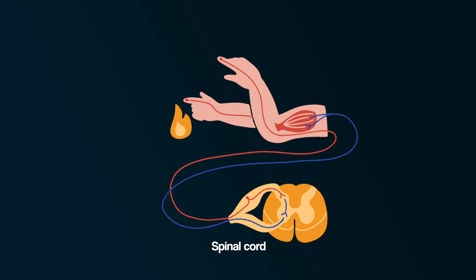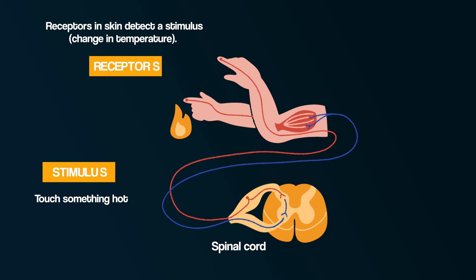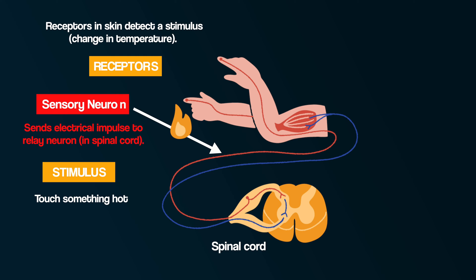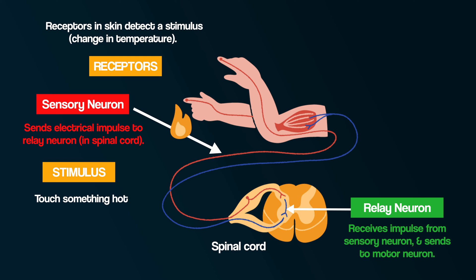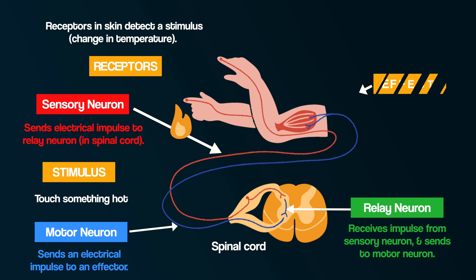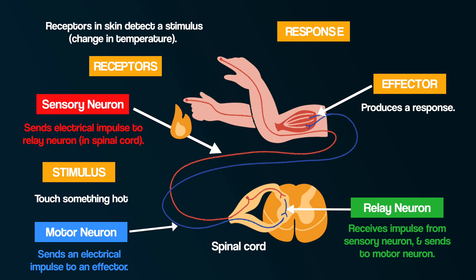Returning to our example: you touch a hot pan and receptors in the skin detect the stimulus — the change in temperature. A sensory neuron sends an electrical impulse to a relay neuron located in the spinal cord of the central nervous system. Relay neurons connect sensory neurons to motor neurons. The motor neuron sends an electrical impulse to an effector, which produces a response — your muscles contract to move your hand away.